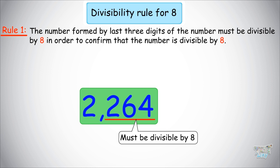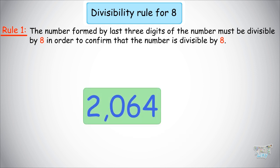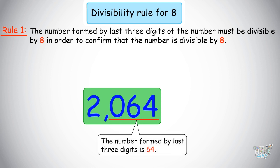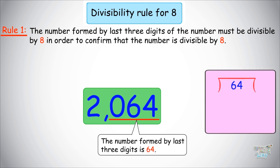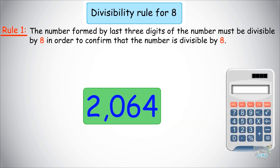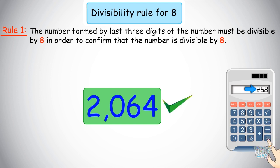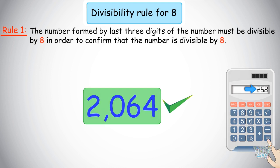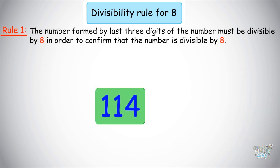Let's learn with an example. First number is 2,064, a 4-digit number so our rule will work. The number formed by the last 3 digits is 064. 64 divided by 8 is 8, so it is divisible by 8. You can check: 2,064 divided by 8 equals 258. Next number is 114, a 3-digit number, so the rule does not apply — you need to use actual division.